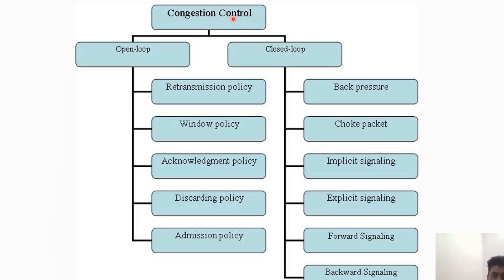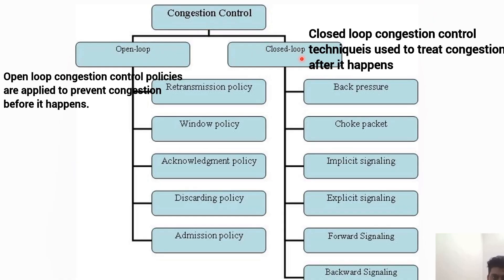These are the main types of congestion control — it can be classified into open loop and closed loop. Open loop means it prevents the congestion before it happens, while closed loop represents congestion being controlled after it has happened. Open loop can be further divided into retransmission policy,